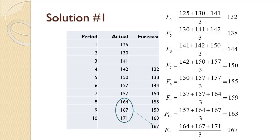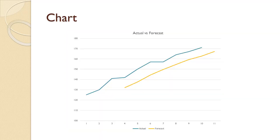This is a forecast going one period into the future. Since beyond this point there are no longer three periods to average, the forecast can only go one period into the future. The slide shows a chart comparing the actual to the forecast. Notice that the orange forecast line is much smoother than the blue actual line. This is why simple moving averages are a form of data smoothing.